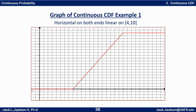Here's an example: the graph is 0 all the way to the left until it reaches 4, then increases, and once it reaches 10 it stays at 1 from there on to the right. In between it increases from 4 to 10 at a constant rate — a straight line connecting them. The interesting part is between 4 and 10; we can ignore the part less than 4 or greater than 10 because the PDF is 0 on those pieces and there's nothing probability-wise to get out of them.